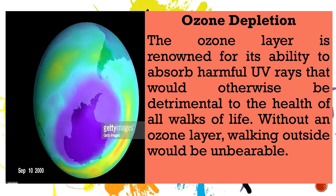Next is ozone depletion. The ozone layer is renowned for its ability to absorb harmful ultraviolet rays that would otherwise be detrimental to all walks of life. Without an ozone layer, walking outside would be unbearable — it actually protects us. But because of the negative human activities we are doing, it is destroying our ozone layer. If we can counter these negative things by being more careful in our activities, then we can save our world and our environment.